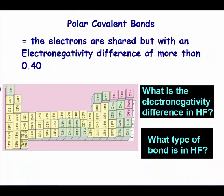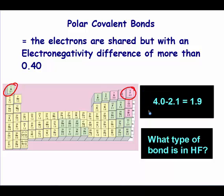While polar covalent bonds are when the electrons are shared but with an electronegativity difference of more than 0.4. So in HF, we have 4 and 2.1. To subtract those, it's bigger minus smaller, so 4 minus 2.1 gives you a difference of 1.9. That's more than 0.4, so that's a polar bond.